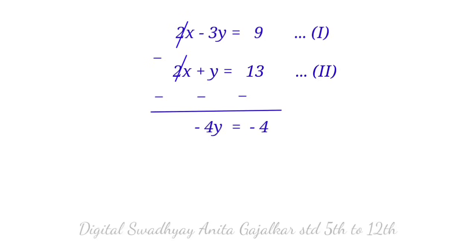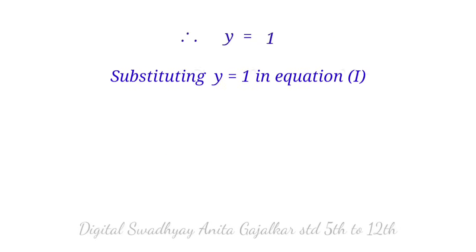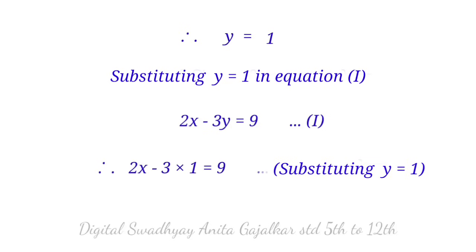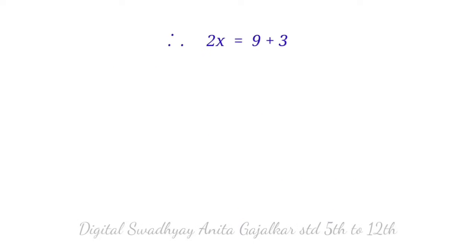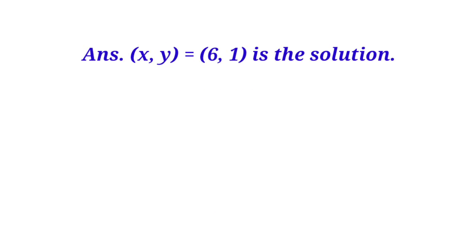Minus 4y equal to minus 4, so 4y equal to 4, giving y equal to 1. Substituting y equal to 1 in equation first: 2x minus 3 into 1 equal to 9, so 2x minus 3 equal to 9, giving 2x equal to 12, so x equal to 6. The answer (x, y) equal to (6, 1) is the solution.